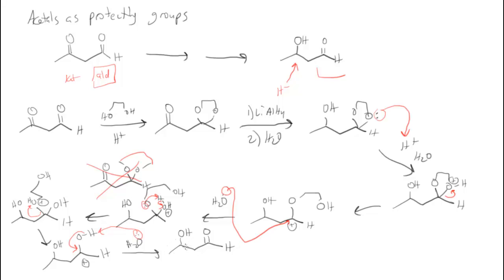So we started up here with our ketone and our aldehyde together. We protected our aldehyde as an acetal. Once we have our aldehyde protected as an acetal, we can do a lithium aluminum hydride reduction of the ketone. Then we deprotected our acetal protecting group back to the aldehyde.